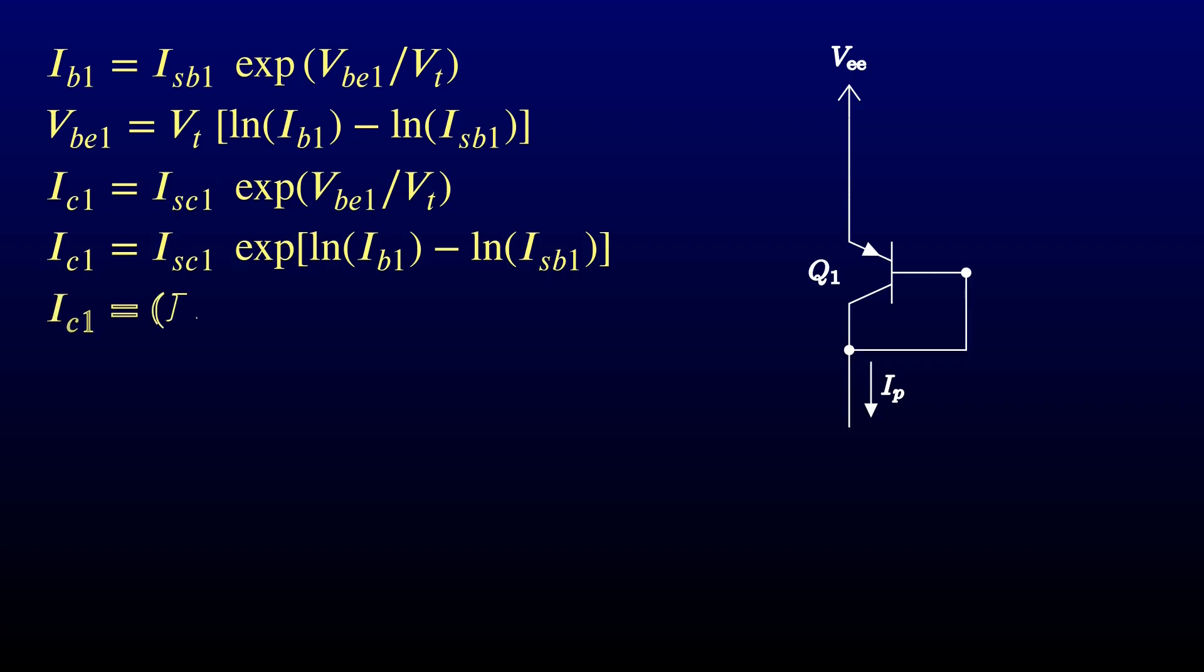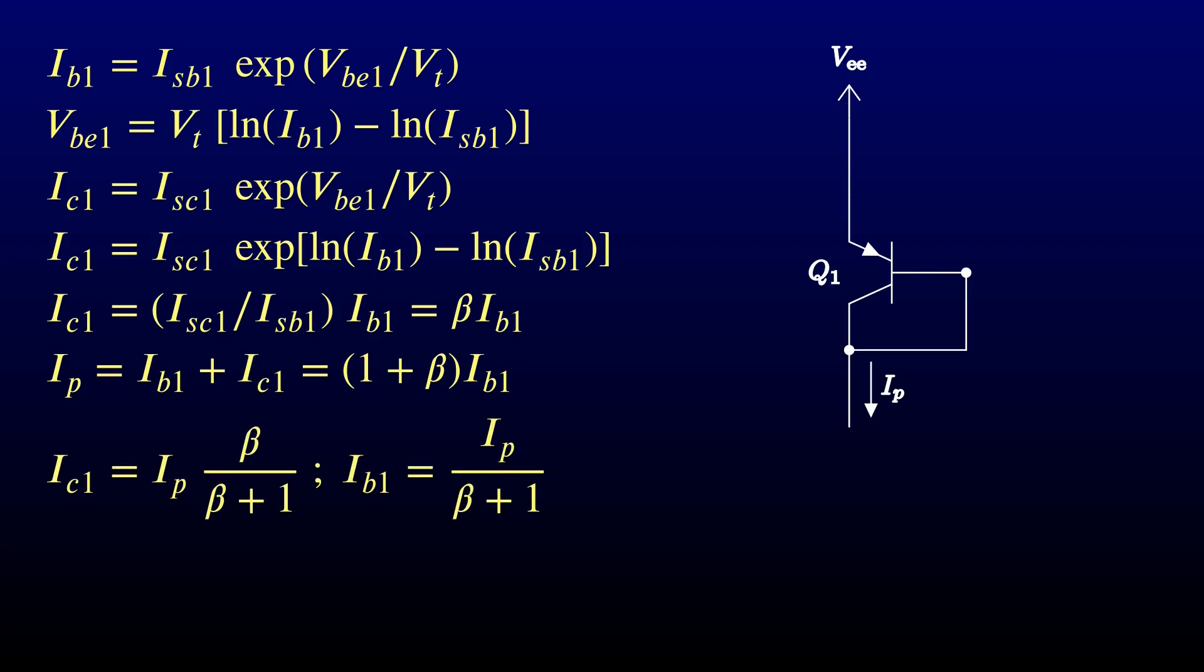The Ebers-Moll equation gives us the collector current, and we can expand that out on algebra autopilot. This should look familiar, because we saw last time we can derive transistor beta this way. Kirchhoff's law tells us that the input current has to be the sum of the base and collector currents, and we can rearrange terms to show where the input current goes.